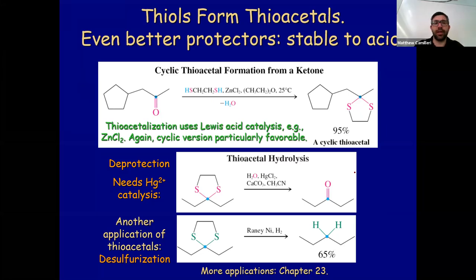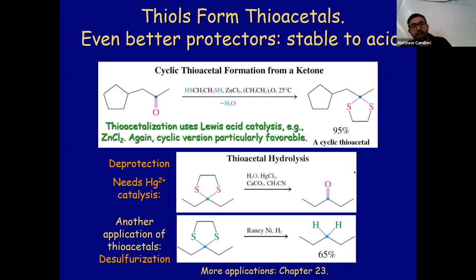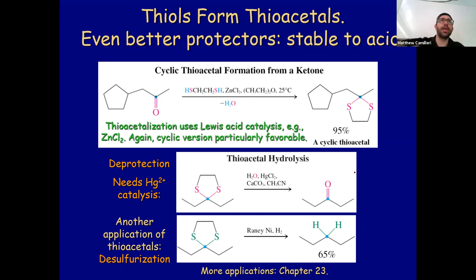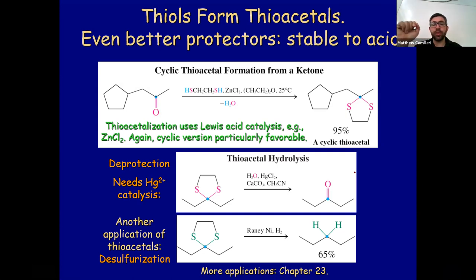Thiols also form thioacetals, which are even better protecting groups than acetals because they are also stable to acids. A thioacetal has sulfur instead of oxygen. Thioacetal hydrolysis can be done using silver chloride and calcium carbonate in acetonitrile — slightly harder conditions, but this means you can do your reactions under acidic conditions. You would use thioacetals when your subsequent reactions require the use of an acid.